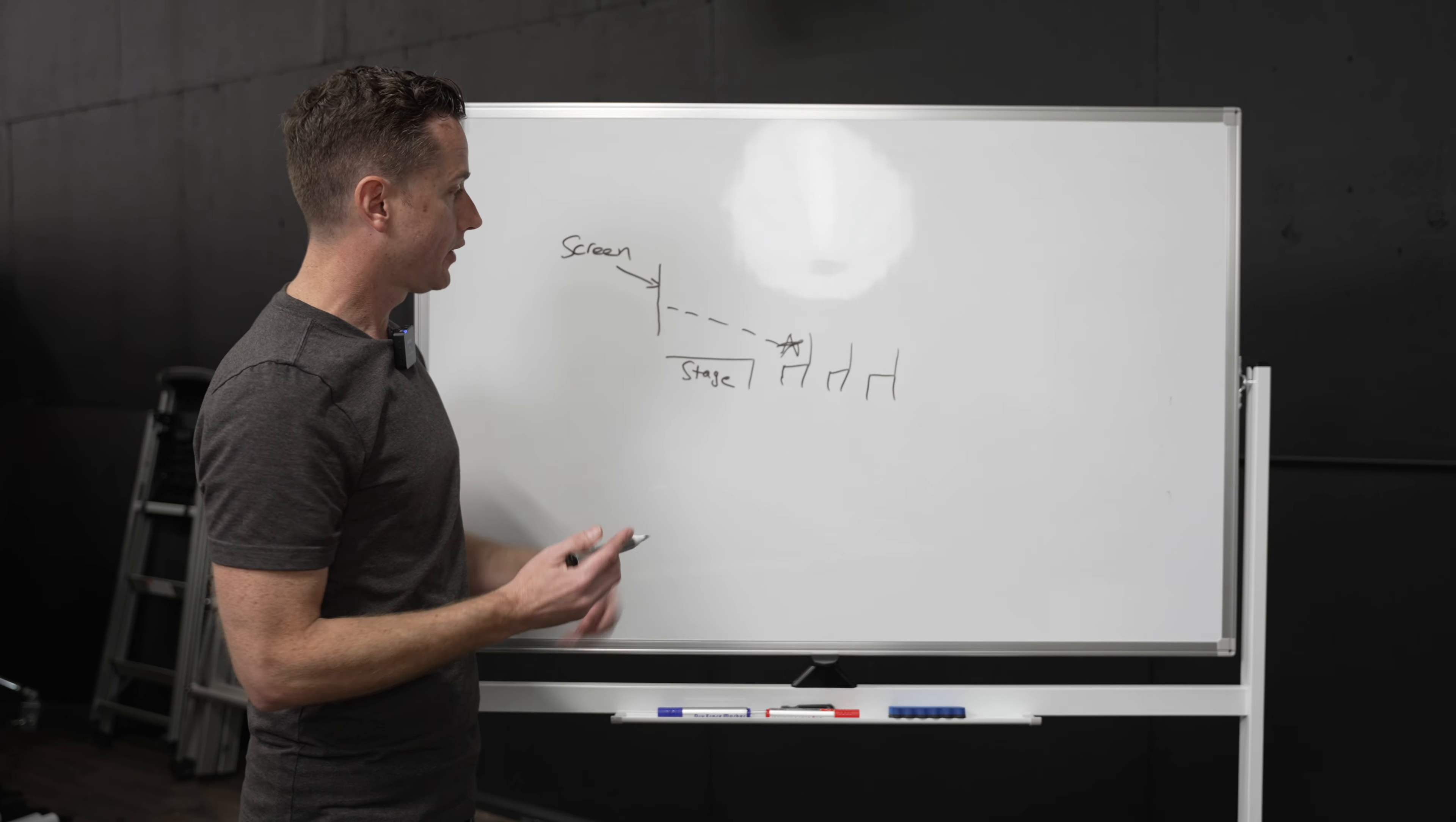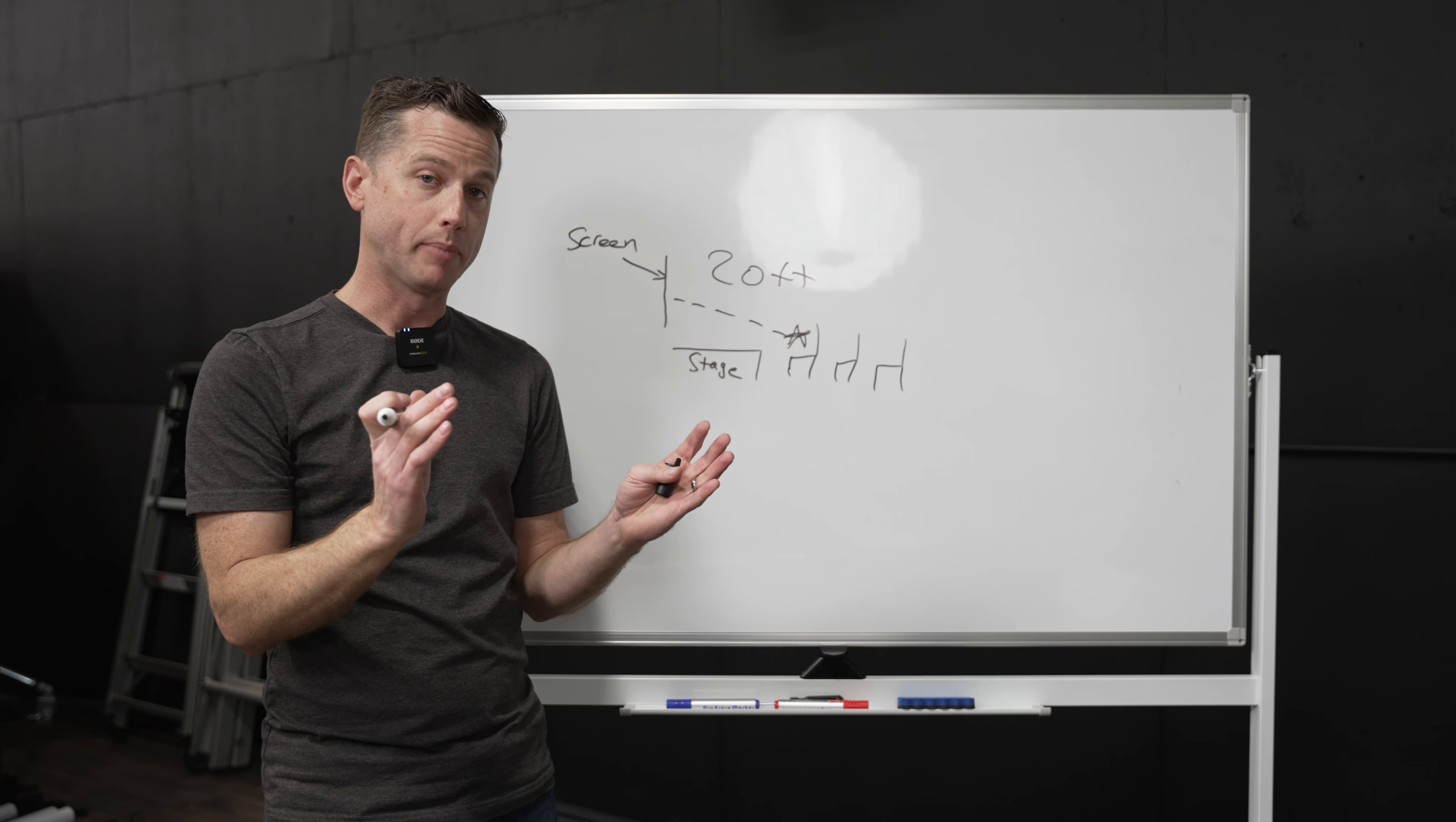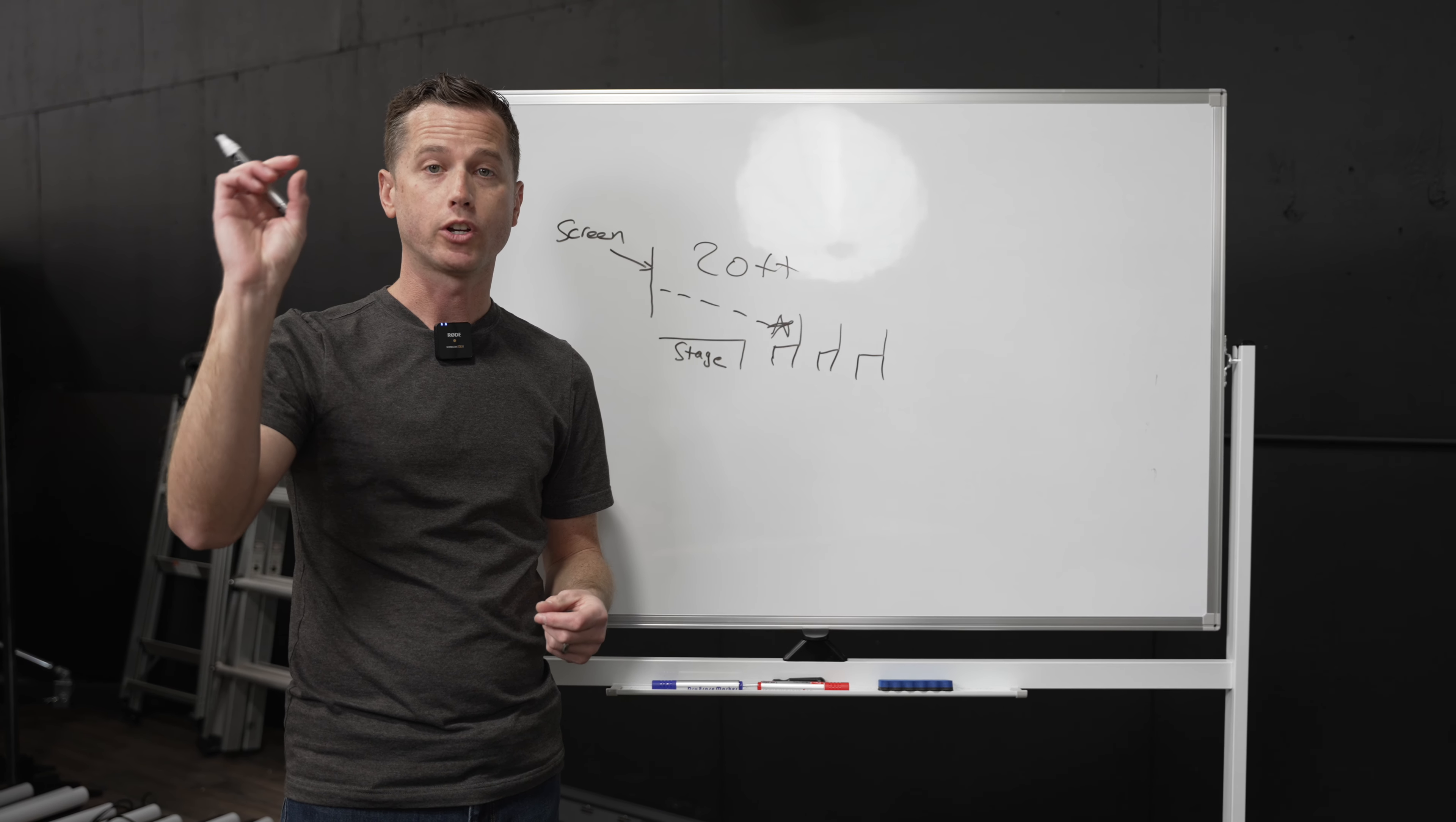How we determine which pixel pitch is right for you is this distance between screen and our first chair. So in this case, let's say this is 20 feet from screen to chair. With a 20 foot viewing distance, it's far enough away that we can get away with a larger pixel pitch such as a 2.97, but it may be too close to go with a 3.91.